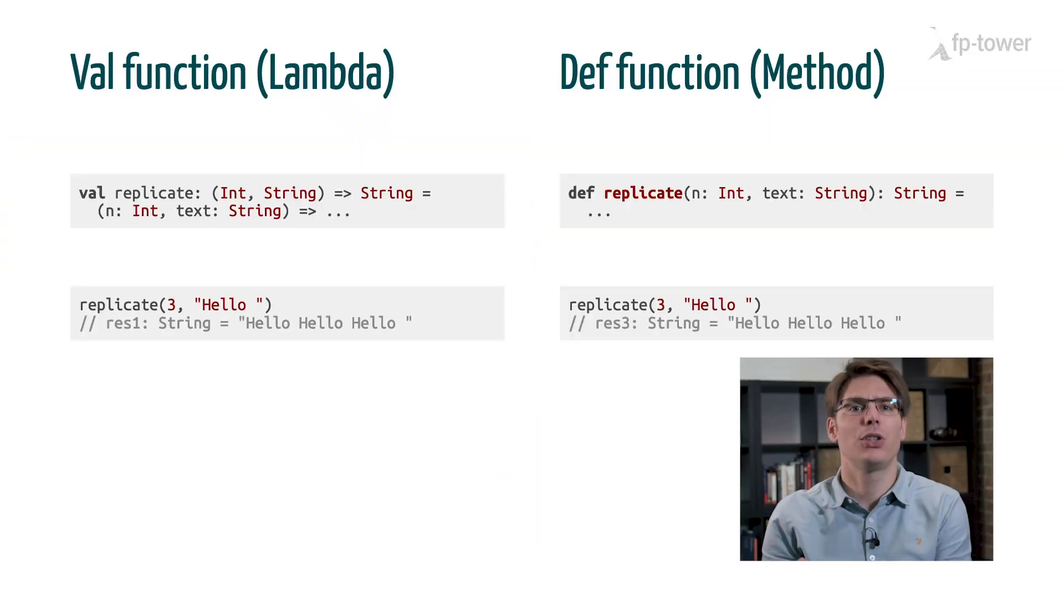Here I created a function called replicate using both the val and def syntax. Replicate takes two arguments, an int and a string, and it returns a new string by basically copying over the input text as many times as it is specified. So if we call replicate with hello and three, we get back hello three times.